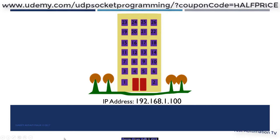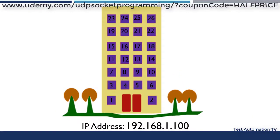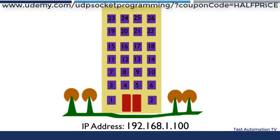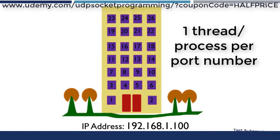A computer contains a large but finite number of ports, just like an apartment building contains a finite number of apartments. Each apartment inside this computer is occupied by only one thread or only one process. Only one thread or one process can use a port number to send or receive data, which means only one person can occupy an apartment at any given time.